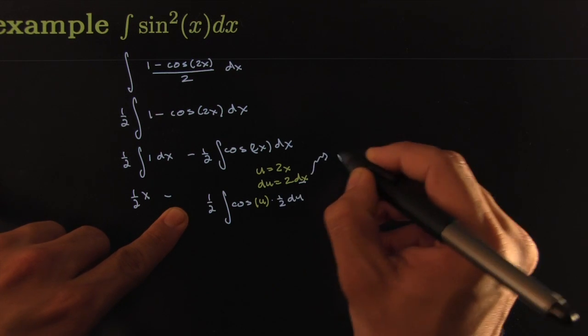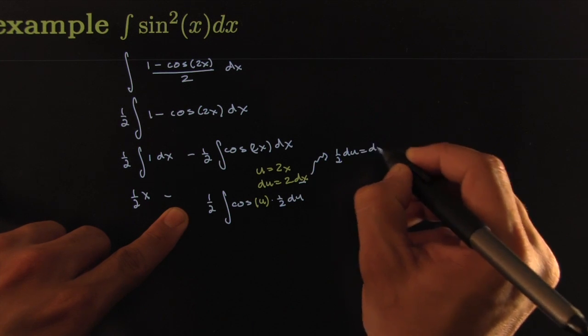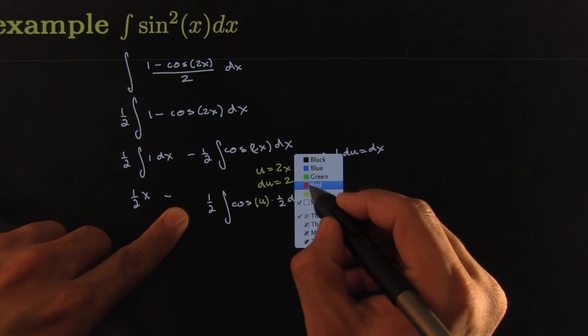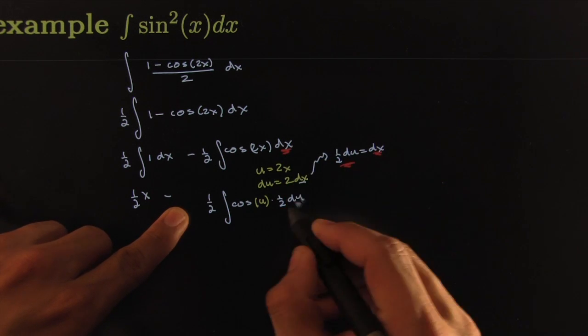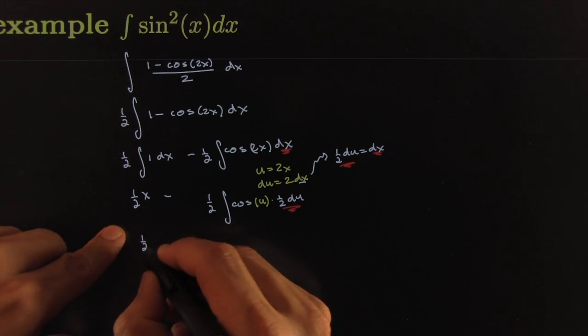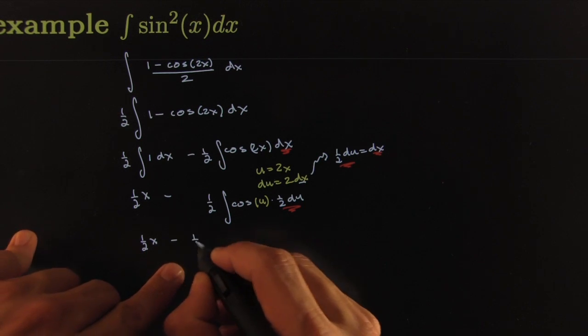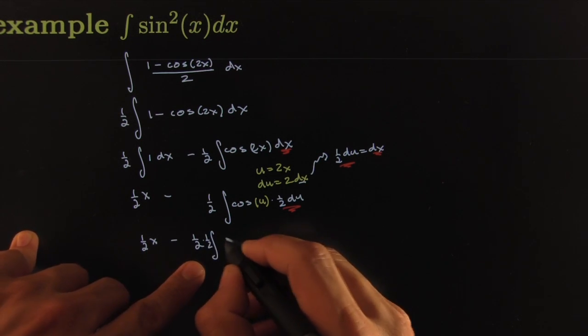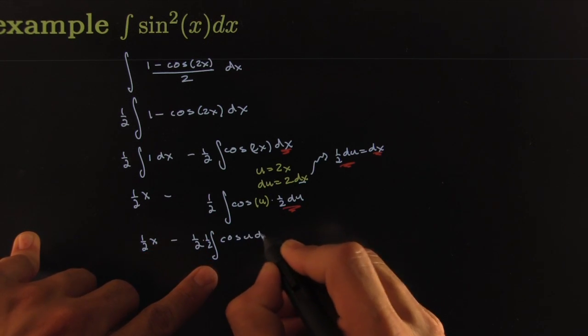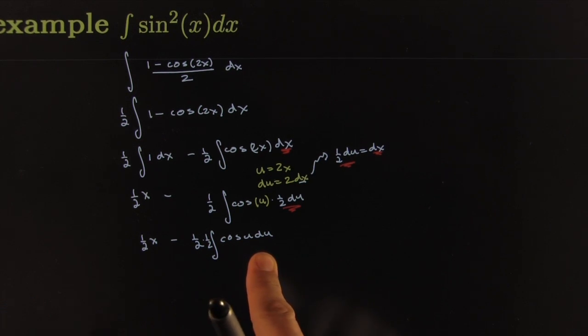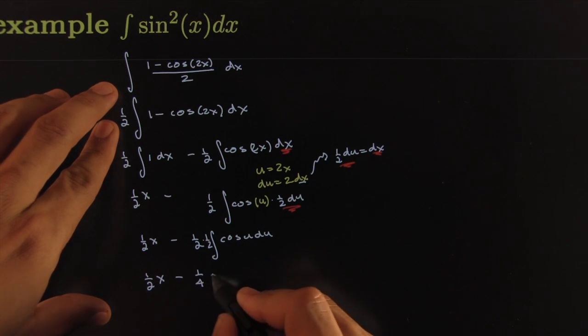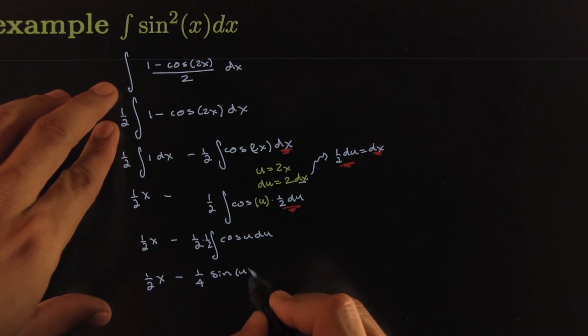From here I can compute. One-half du is the same thing as dx by dividing both sides by 2. Therefore this piece, the dx, can be replaced with this amount. That brings us to one-half x minus one-half integral of—I've got an extra one-half here because I've got a half and a half—cosine of u du, which is just a basic one. That leads to one-half x minus one-fourth times sine of u plus a constant.